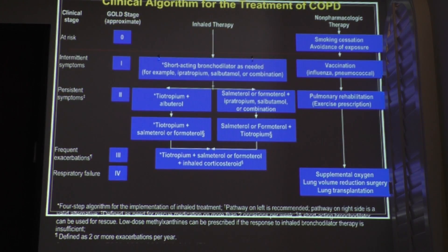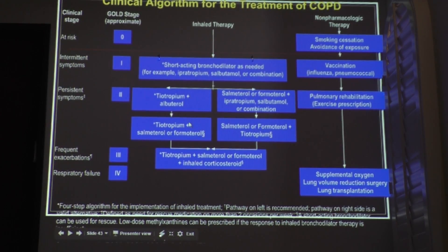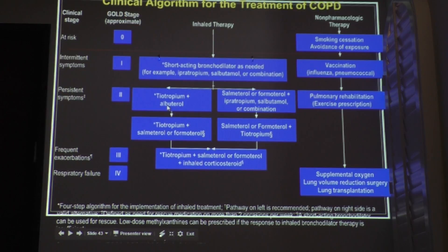This is the clinical algorithm for COPD — these two are approved approaches. These are the different GOLD stages of COPD. We always start with an anticholinergic agent like Atrovent and a short-acting beta agonist. When the patients are failing that, that's when you move to a longer-acting agent.